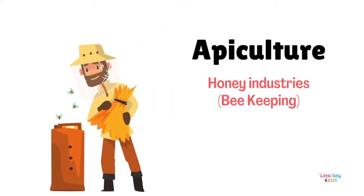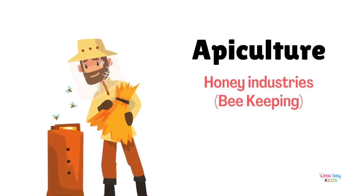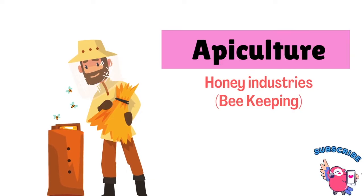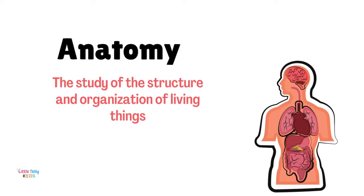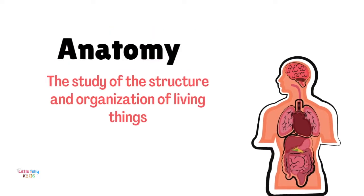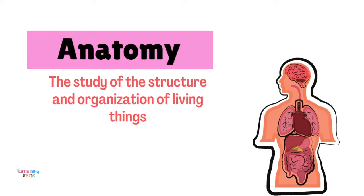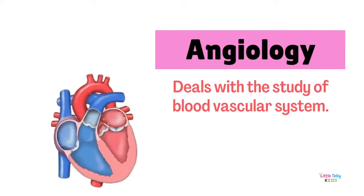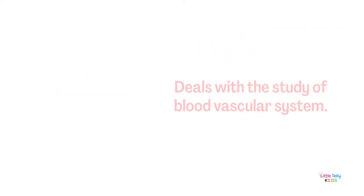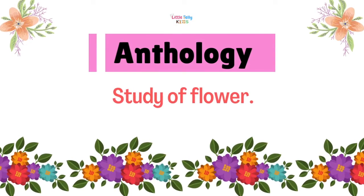Apiculture: honey industries or beekeeping. Anatomy: the study of the structure and organization of living things. Angeology: deals with the study of the blood vascular system. Anthology: the study of flowers.